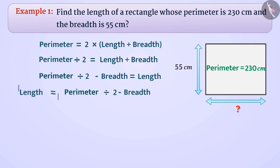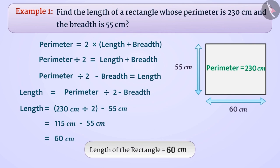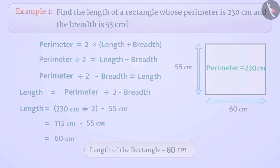Length is equal to perimeter of the rectangle divided by 2 minus breadth. Thus, length is equal to 230 cm divided by 2 minus 55 cm, which is equal to 115 cm minus 55 cm, which is equal to 60 cm. The length of the rectangle will be 60 cm.